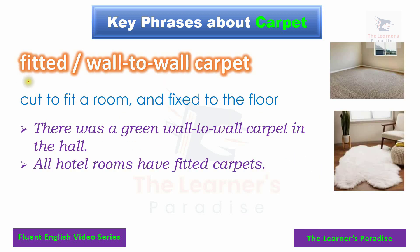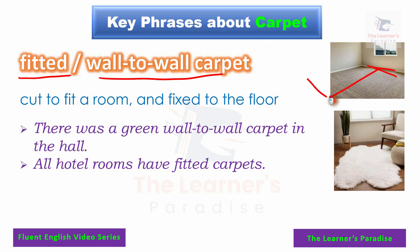The last phrase of today's video is fitted carpet or wall-to-wall carpet. A fitted carpet covers all of your floor — it is cut to fit all the floor inside a room and fixed to the floor so you cannot remove it easily. It is also called wall-to-wall carpet because it covers all the area from one wall to the other.